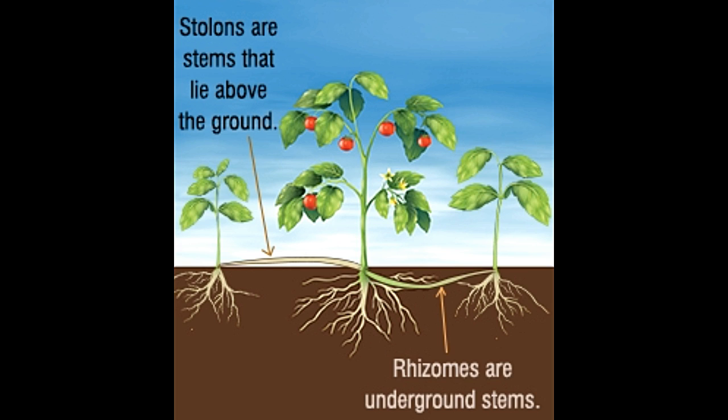Stolons and rhizomes are integral parts of a plant that allow it to spread and reproduce. The former is slender and long, while the latter is thick and short. Did you know? In plants, stolons are often referred to as runners, as they creep above the ground and run horizontally over the top of the soil.